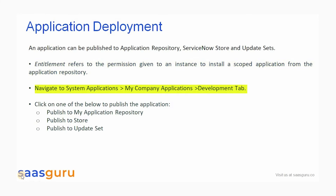Navigate to System Application and then to the Module for My Company Application. The Development tab will be visible on this page. Depending on your requirement, you can publish the application to My Application Repository, the ServiceNow Store, or Update Sets from this tab.